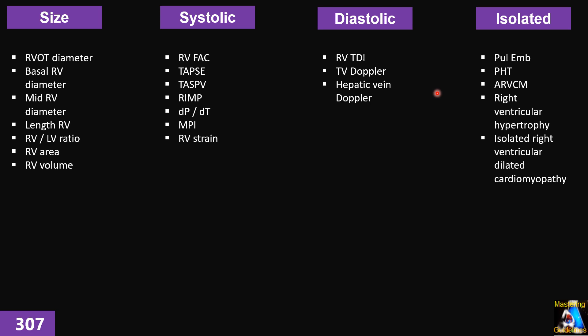Finally, I am going to talk about the most important clinical aspects of isolated disorders that most involve the right side, including pulmonary hypertension, pulmonary embolism, arrhythmogenic right ventricular cardiomyopathy or dysplasia, isolated right ventricular hypertrophy, and isolated right ventricular dilated cardiomyopathy. Now let's go and see the most important clinical tips for measuring right ventricular size and volume.